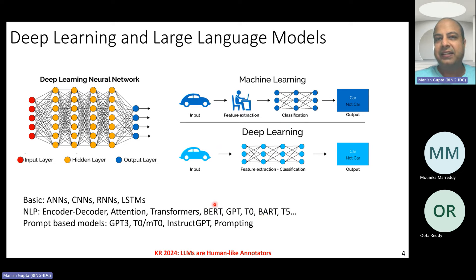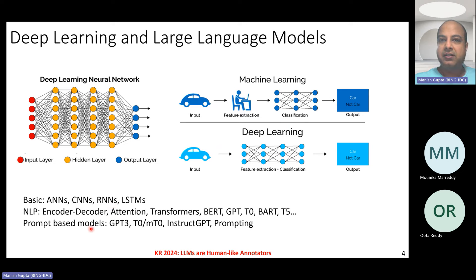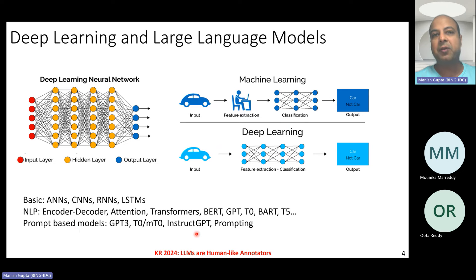Later, people came up with prompt-based models. The idea behind prompt-based models was that a single human can do so many tasks — why do you need a different model for different tasks? That basic idea led to prompt-based models like GPT-3, T0, MT0, and InstructGPT, and the notion of prompting as we know it today. This started with GPT-3 onwards. OpenAI believed that humans don't require large supervised datasets to learn new tasks — a single human can do many tasks just by being given a simple directive in natural language.